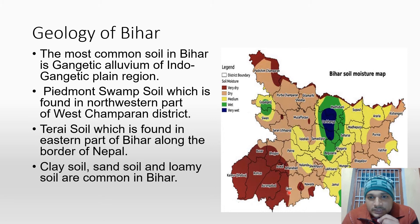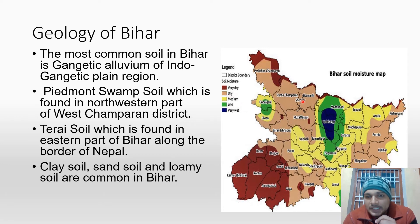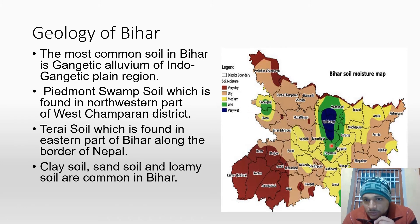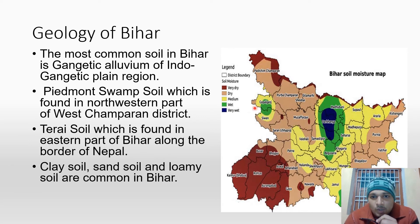Looking at the soil map of Bihar, most of the area is dry. The blue area represents one region type. The green areas are wet regions like Madhubani, Supaul, Begusha Desh, and this whole area of Bihar. Mostly Gopalganj also falls in the wetter zone.